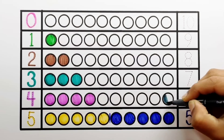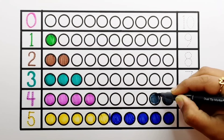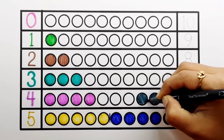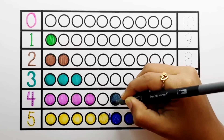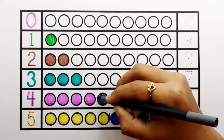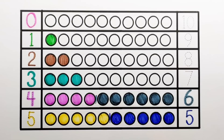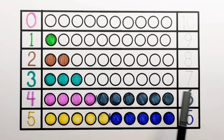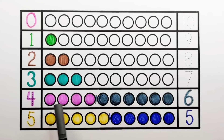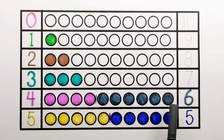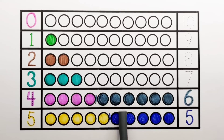Number 6. 1, 2, 3, 4, 5, 6 — 6 balls. 4 plus 6 makes 10. 1, 2, 3, 4, 5, 6, 7, 8, 9, 10. 4 plus 6 equals 10.